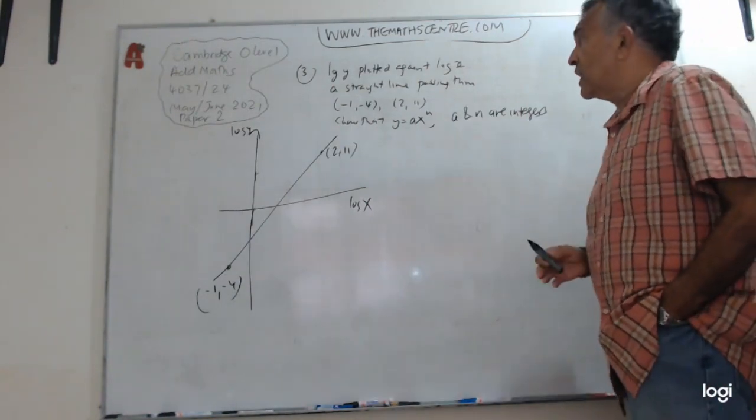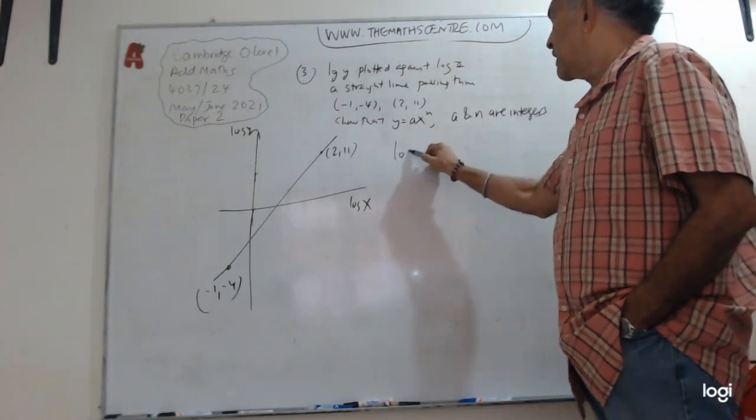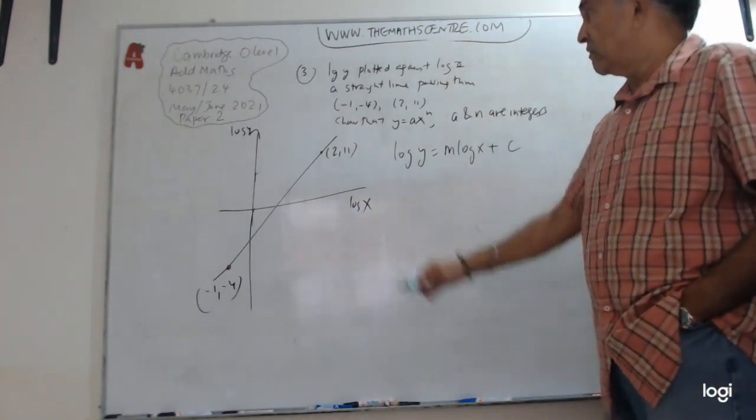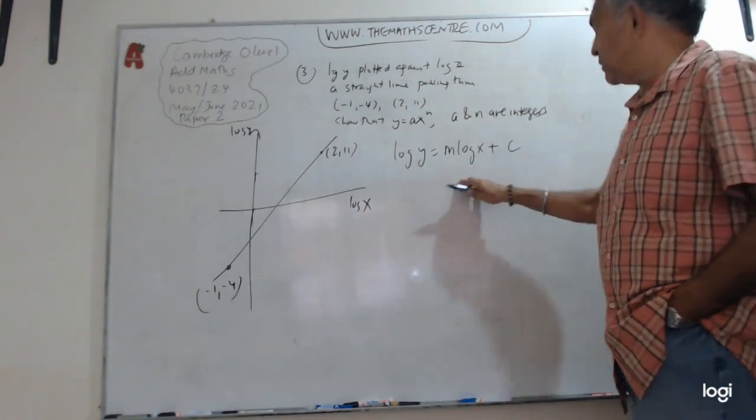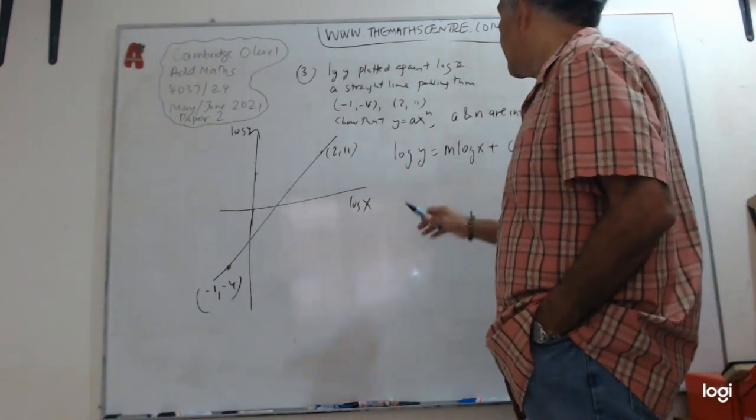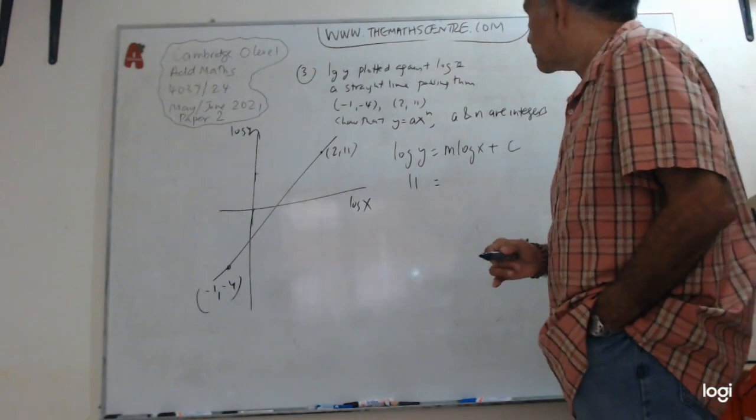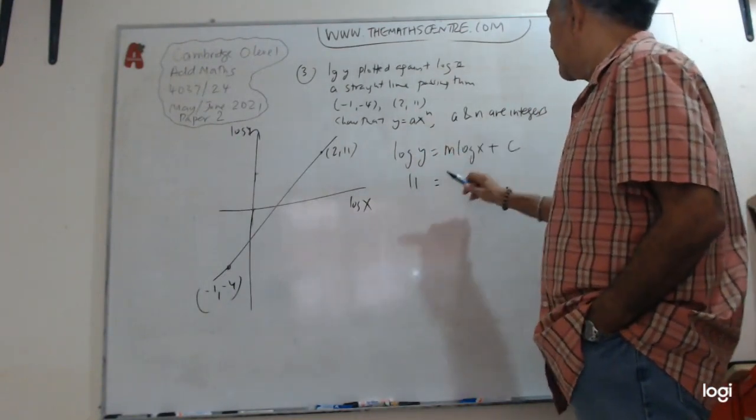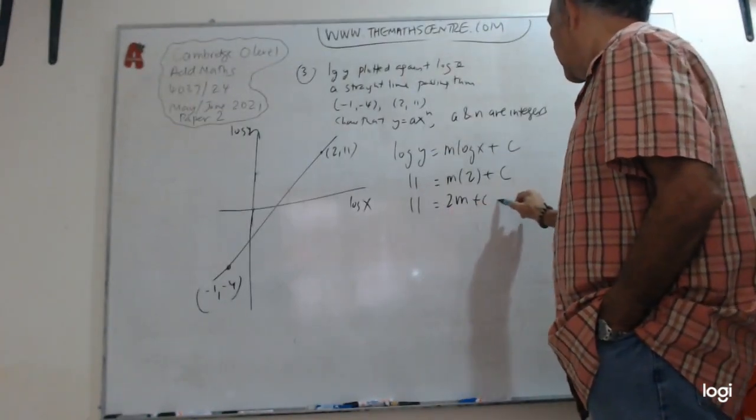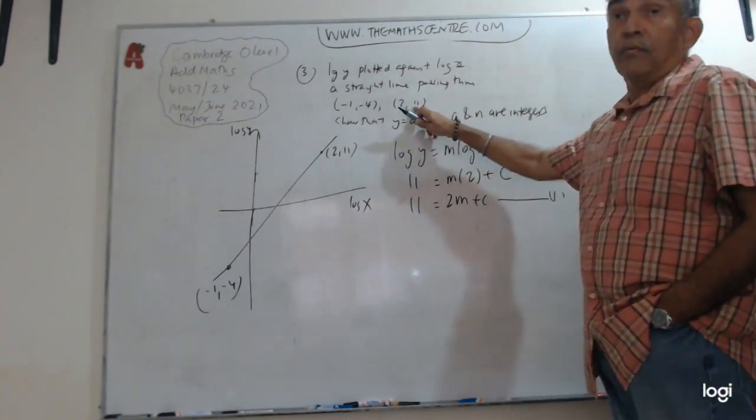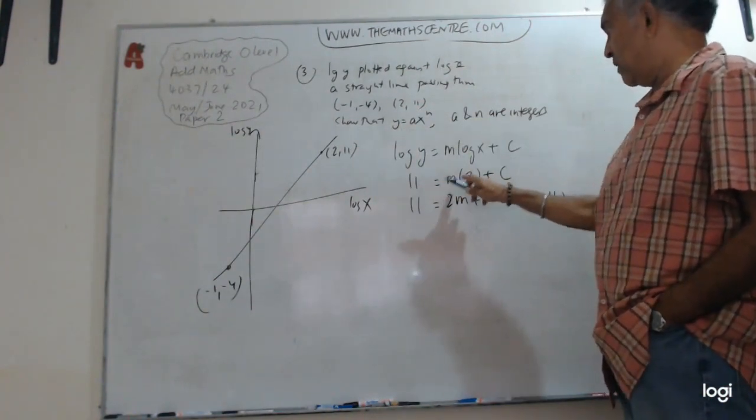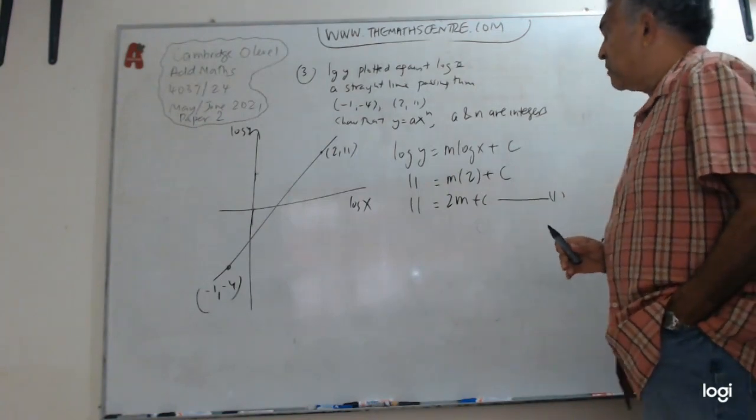So we know we have got a straight line here, so we can write vertical axis equals M times the horizontal axis plus your intercept. So let's plug in some points. Let's take the first one. We have got 11 equals M times 2 plus C. This is the value of log Y. This is the value of log X. So log Y, log X, there's M and there's a C.